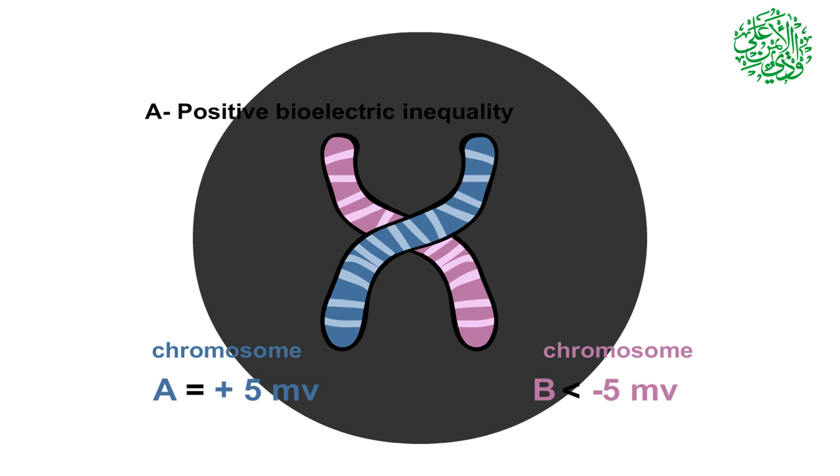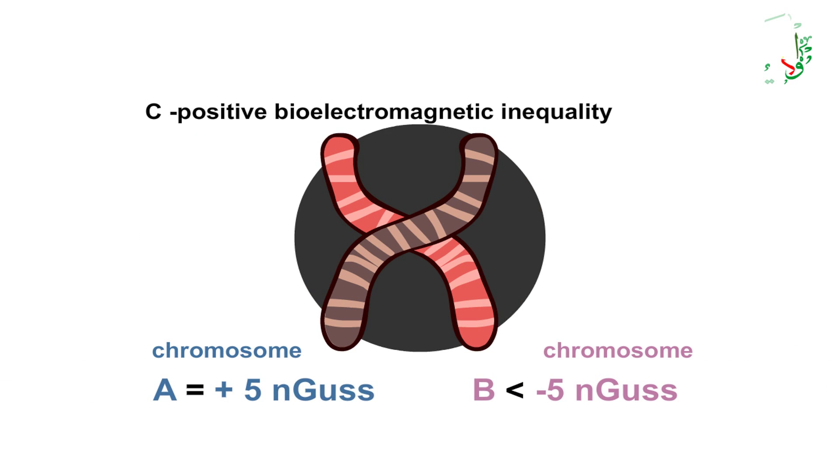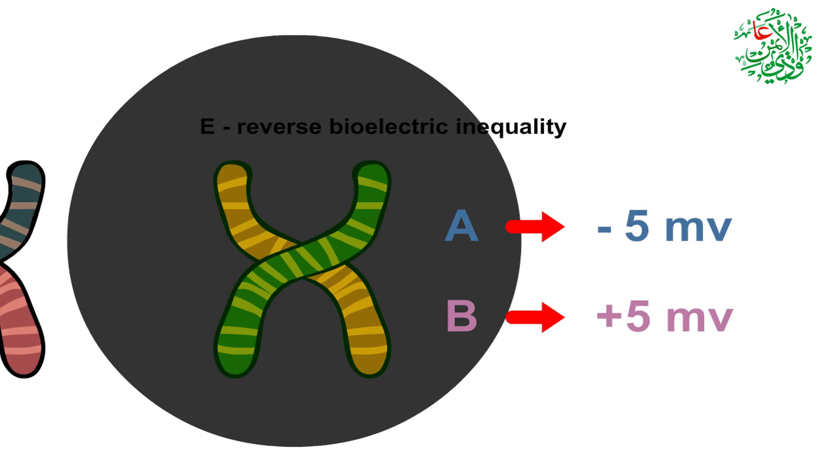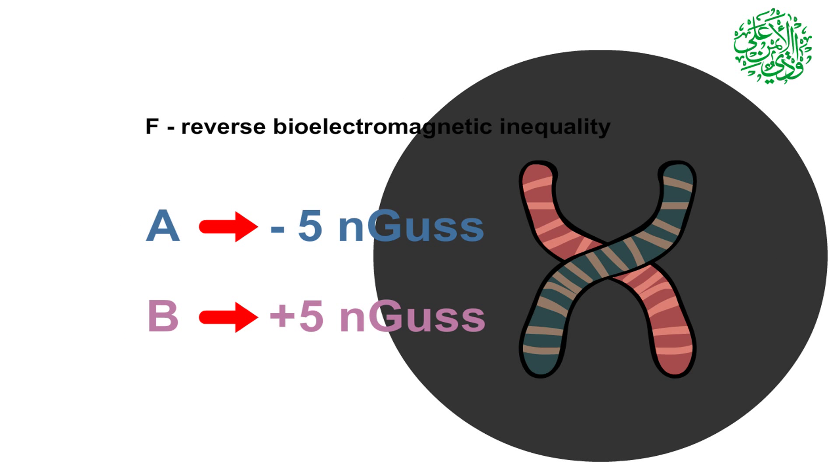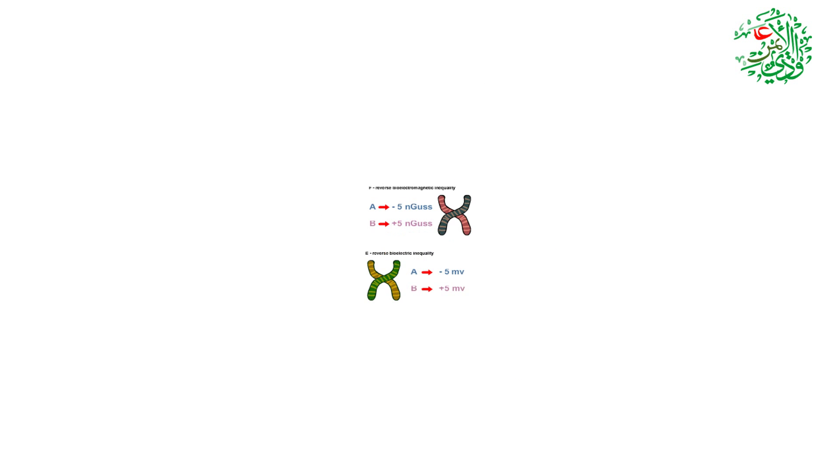Bioelectric and bioelectromagnetic imbalance of chromosomes may be individual or combined. In the individual form, there may be an imbalance in all chromosomes. For instance, all of 23 pairs of chromosomes may have one type of positive bioelectric imbalance. In the combined form, each of the chromosomes may have one type of imbalance.